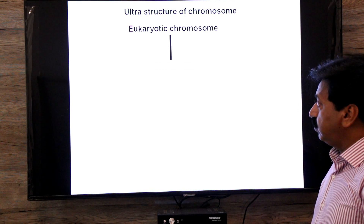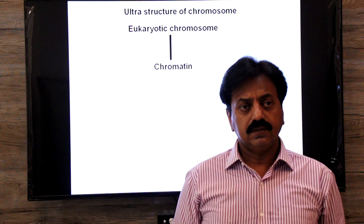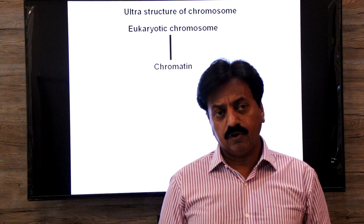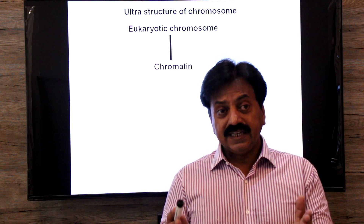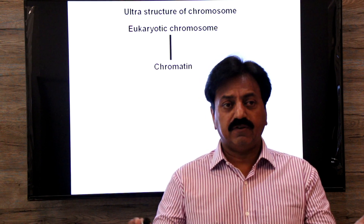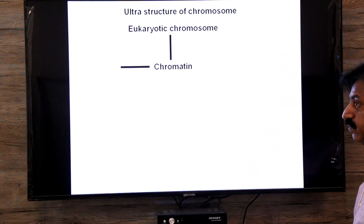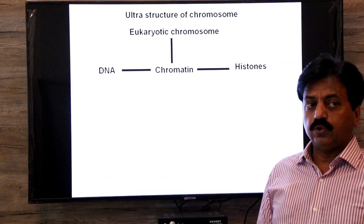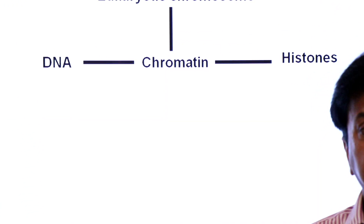Human eukaryotic chromosomes are made up of chromatin. Chromatin is a DNA-histone complex, made up of two parts: DNA and histone proteins.